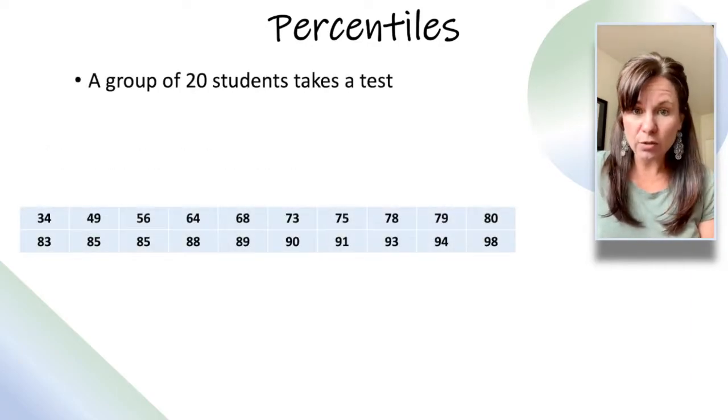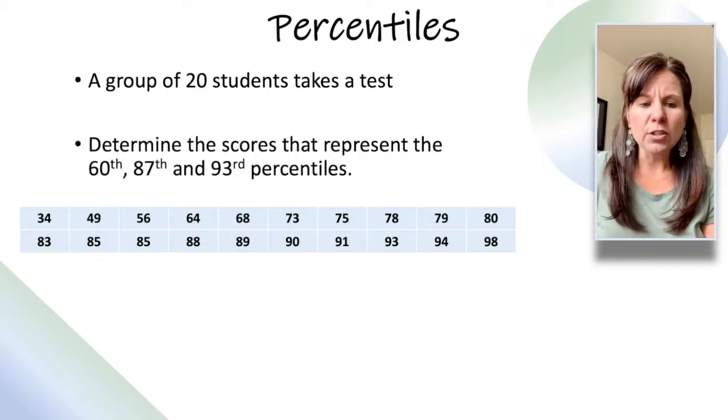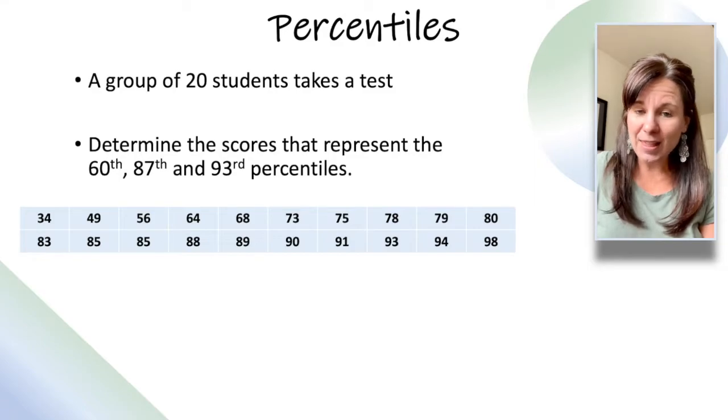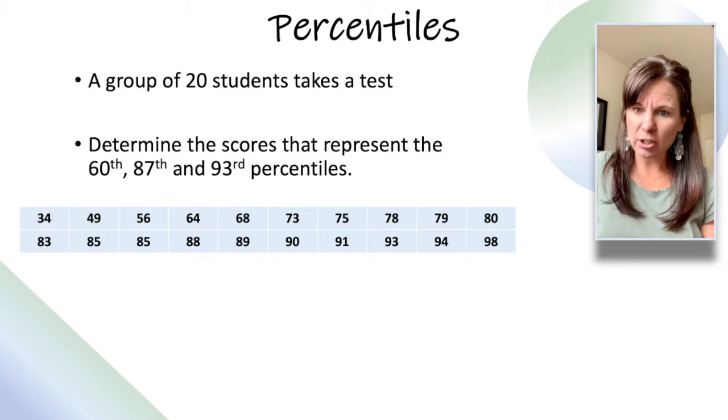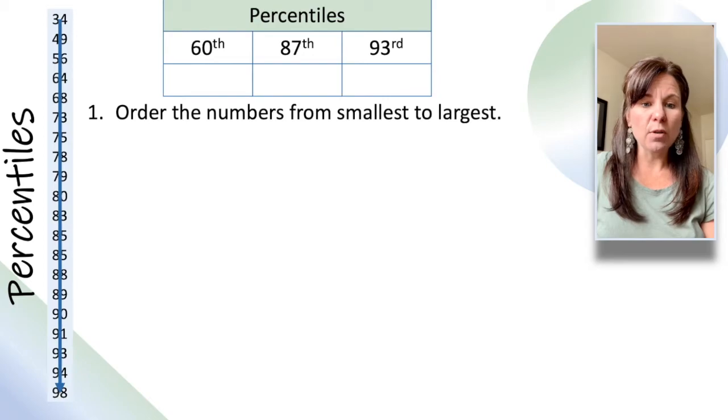We've got 20 students who took a test, and you can see their scores there, and we need to determine the scores that represent the 60th, 87th, and 93rd percentiles. And I'll let you know what that means in just a minute. But the first thing we're going to do is take the scores, and you need to put them in order from smallest to largest.